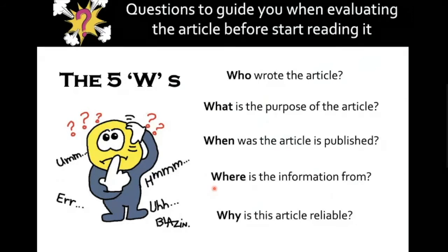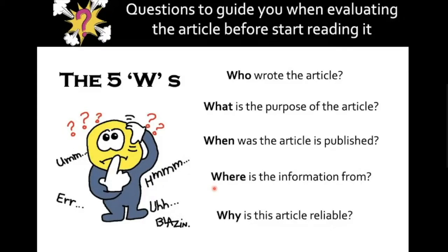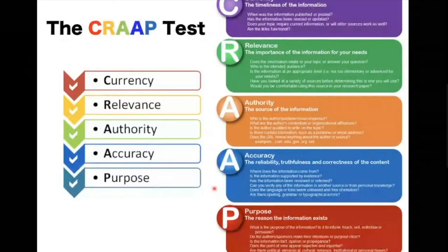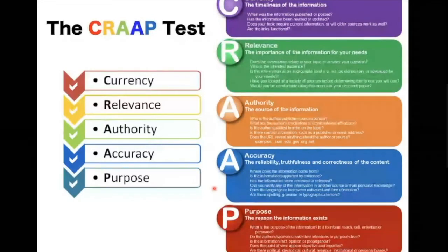Before you start reading, I usually apply the Five Ws: Who wrote the article? What is the purpose of the article? When was the article published? Where is the information from? And why is this article reliable — reliable to your work, your write-up, to the community? You need to think broadly. To evaluate the journal, you can apply the CRAAP test — C-R-A-A-P — where you assess the currency, relevance, authority, accuracy, and purpose of the article. This CRAAP test is suitable for any type of publication.